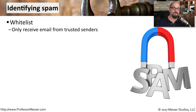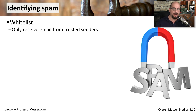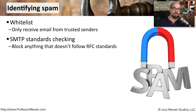These email gateways use a number of different methods to identify unsolicited messages or spam. One of these is to only allow messages from known good locations — this is whitelisting. Everything else would be blocked except for very specific emails that you allow. Another type of spam check is to see if messages are conforming to specific SMTP standards, and anything that doesn't follow the RFC is not allowed into the network.